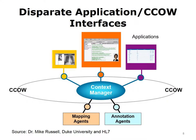The application tells the CCOW-compliant Context Manager that it wants to set the patient context and provides the Context Manager with an identifier that indicates the context subject — for example, the medical record number for the patient of interest. The Context Manager then notifies the other applications that the context has been changed, and each application obtains the patient's identifier from the Context Manager. Each application then adjusts its internal state and data display accordingly. This all happens in real time. The current version of CCOW is version 1.6.